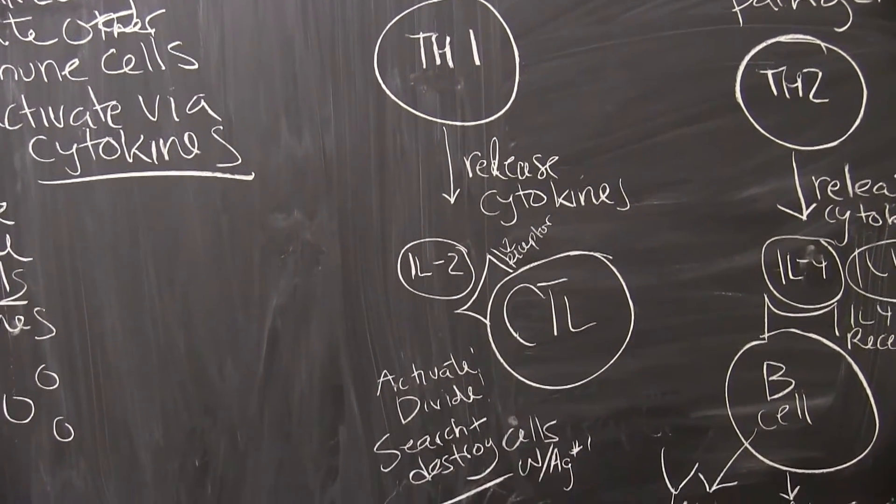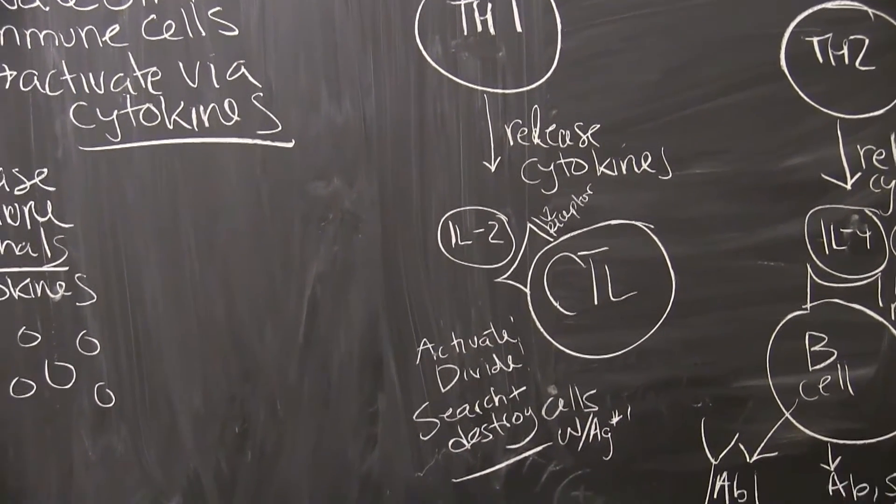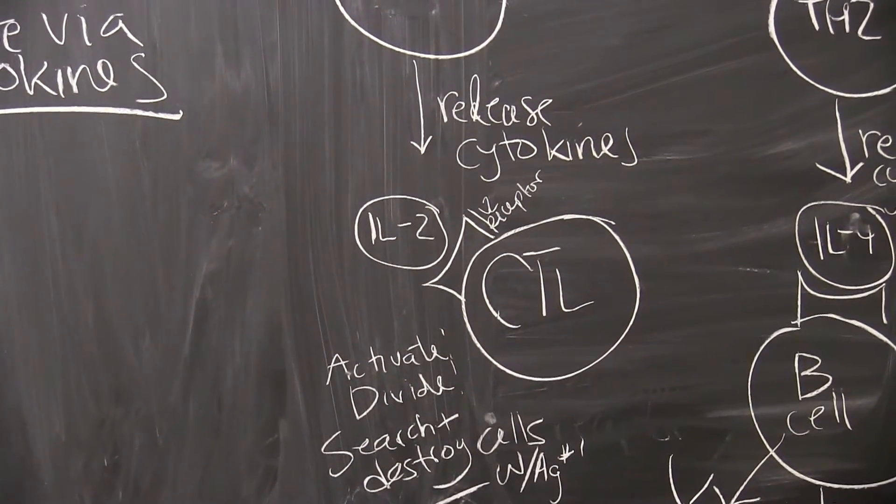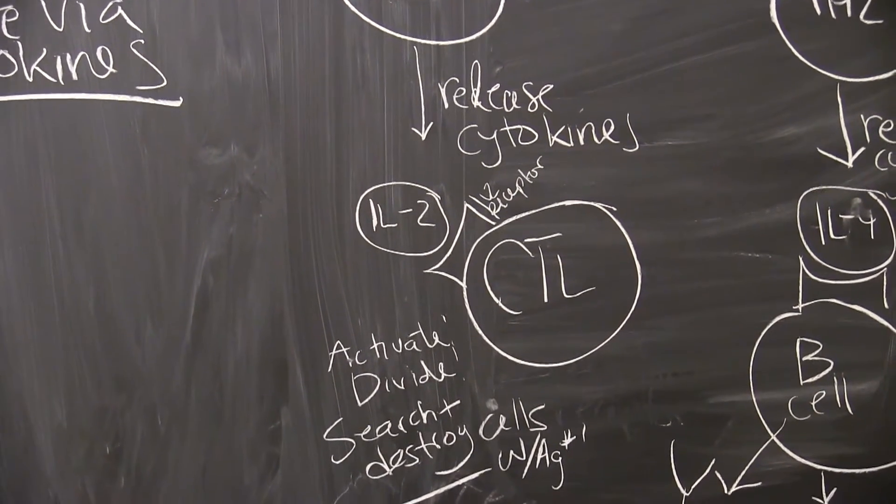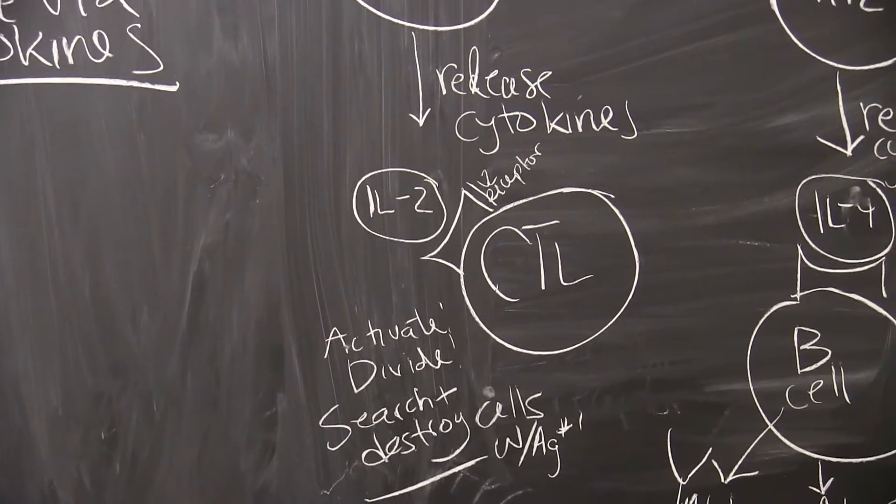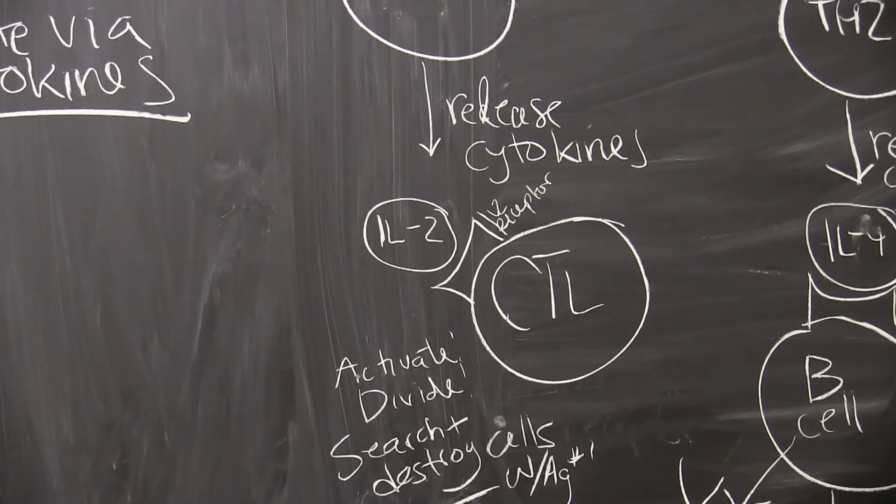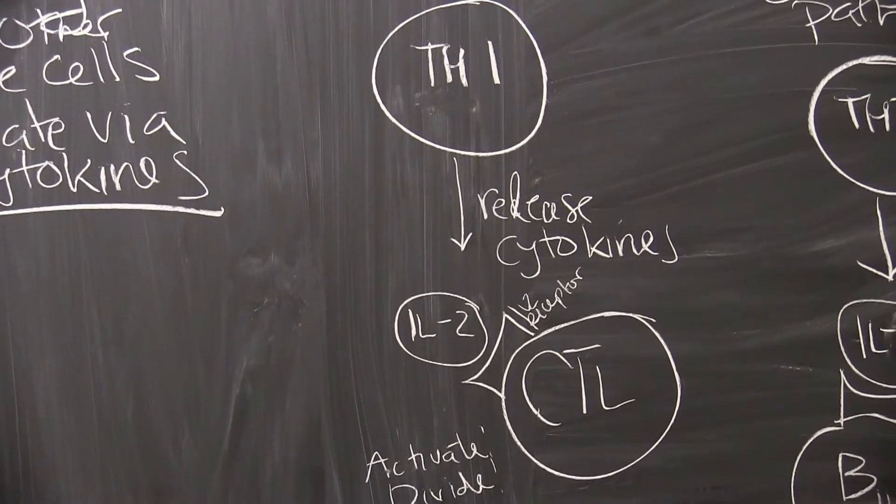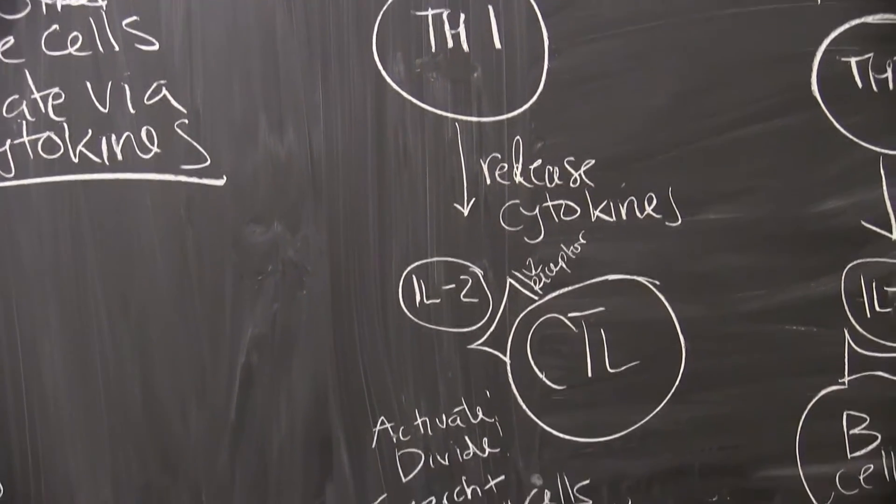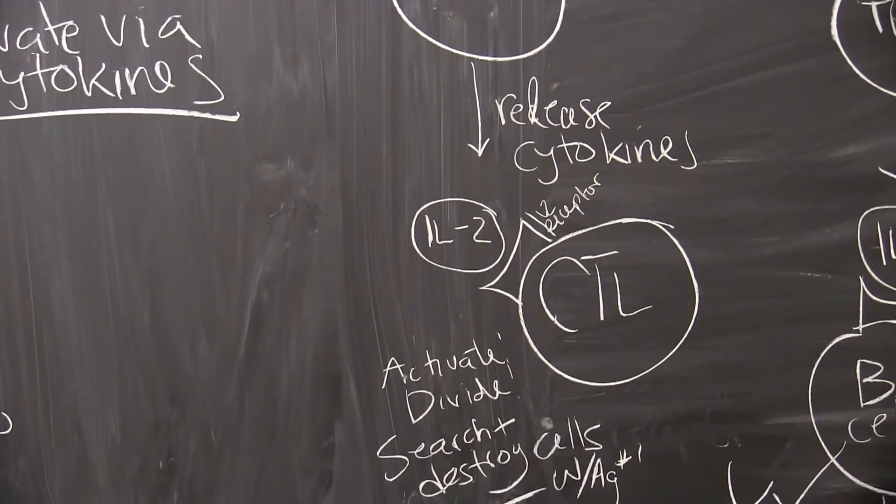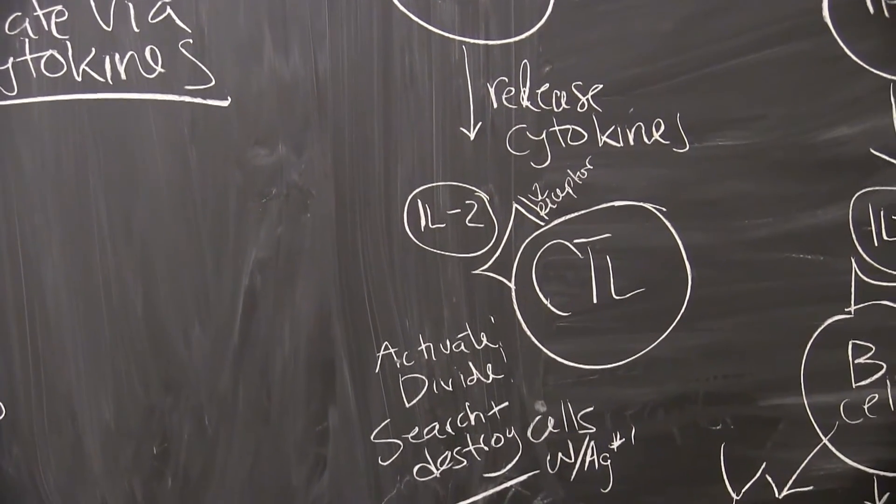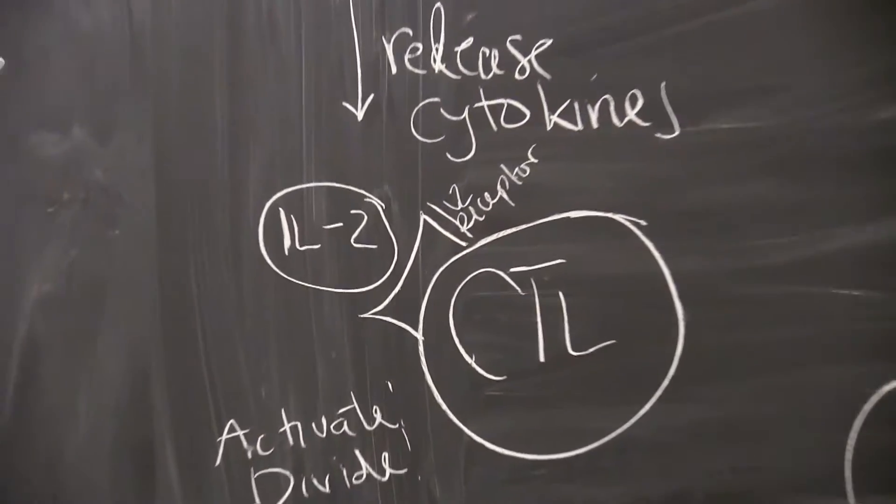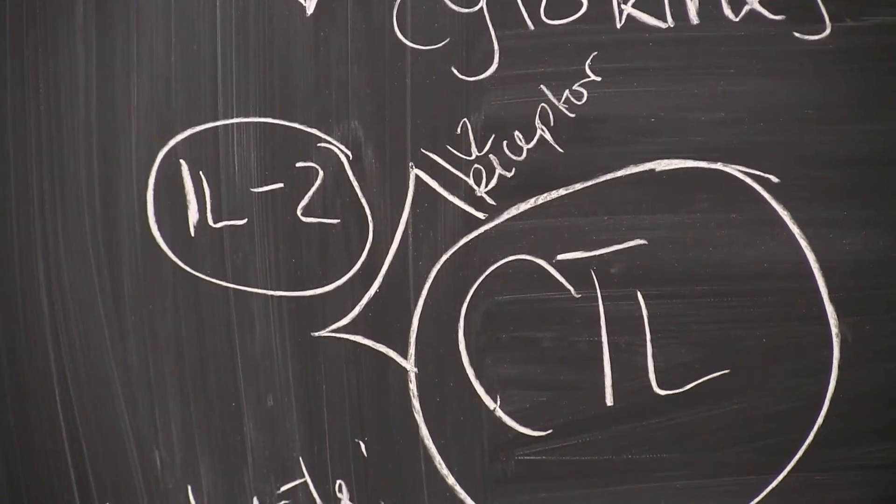Right here I've shown IL-2, which is an example of a cytokine that activates these killer T-cells. IL-2, again, that's a protein, a signal that's released by the TH1. So, made and released by TH1, the IL-2 travels and it goes to find its very specific IL-2 receptor, which is what I've drawn right here.